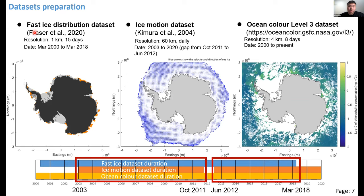Three datasets are used: first, a fast ice distribution dataset providing the distribution of fast ice to identify where and when it breaks out; second, an ice motion dataset to find the destination of broken fast ice; and third, an ocean color Level 3 dataset providing chlorophyll concentration over the Southern Ocean to determine the impact of fast ice. The research temporal coverage is defined by combining these three datasets.